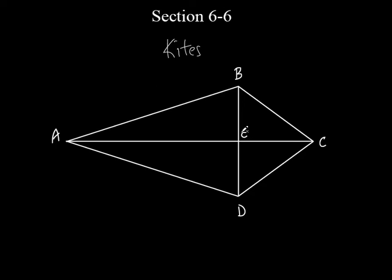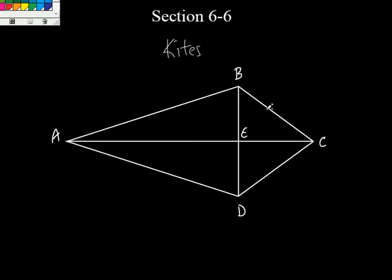Here's what a kite is. A kite has, by definition, exactly two pairs of consecutive equal sides. What does that mean? It means the sides that are next to each other. Look at AB and AD — they're next to each other, and they will be equal to each other.